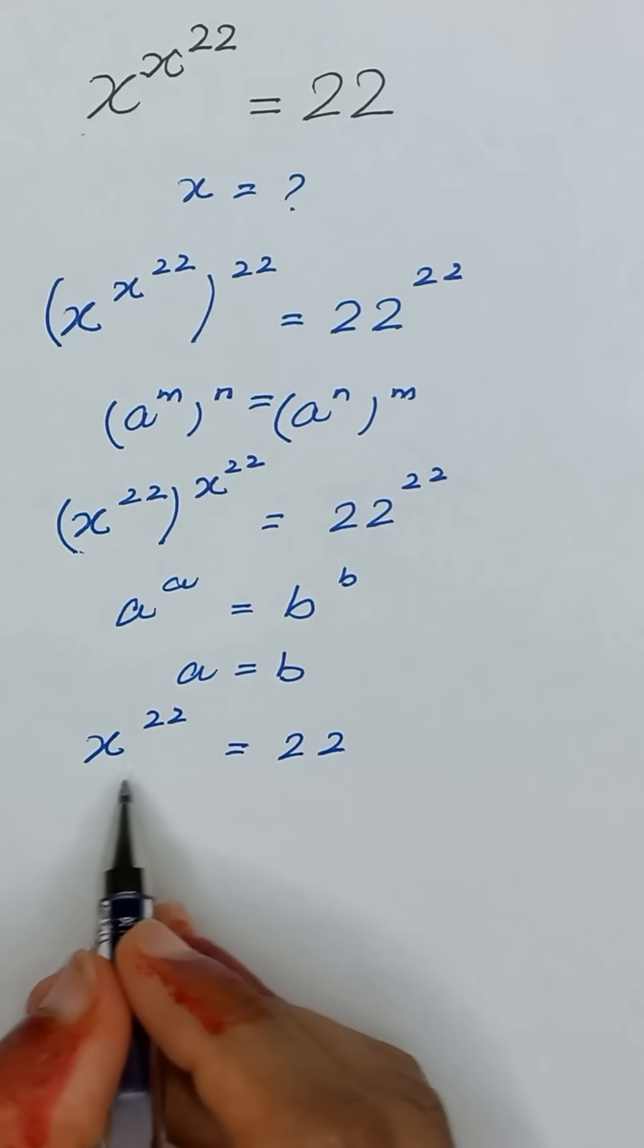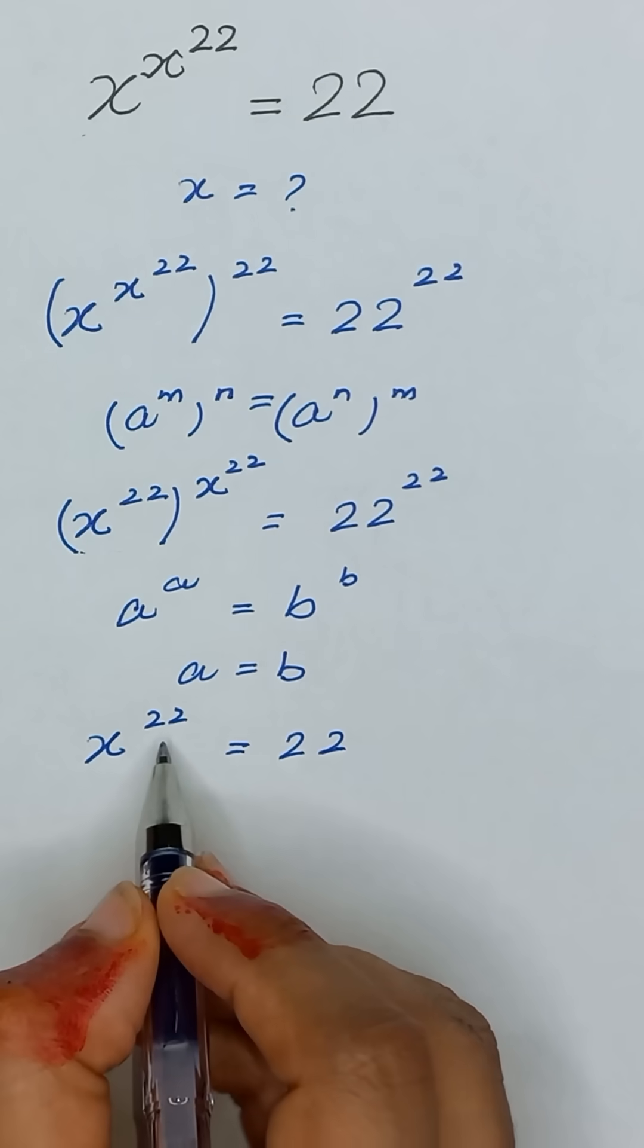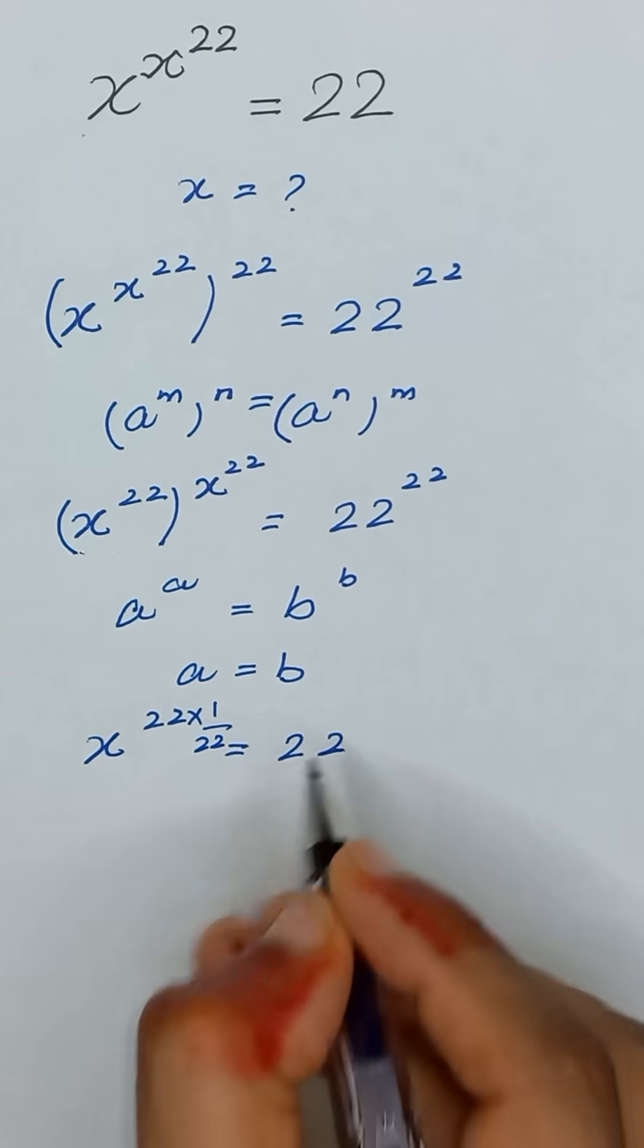Now we have to find the value of x. So we will remove this power 22 by multiplying power 1 divided by 22 on both sides.